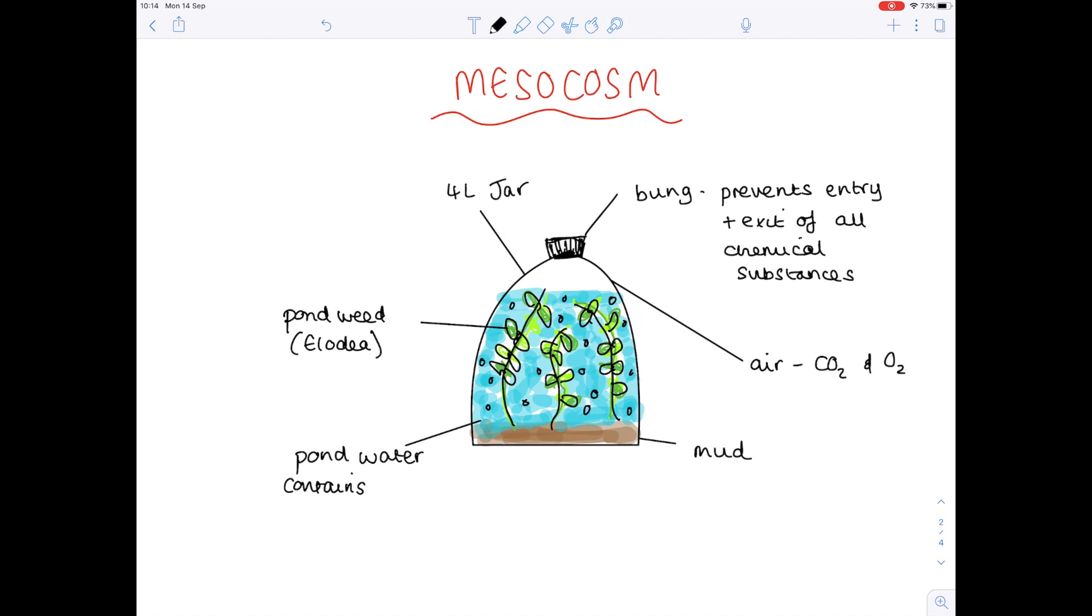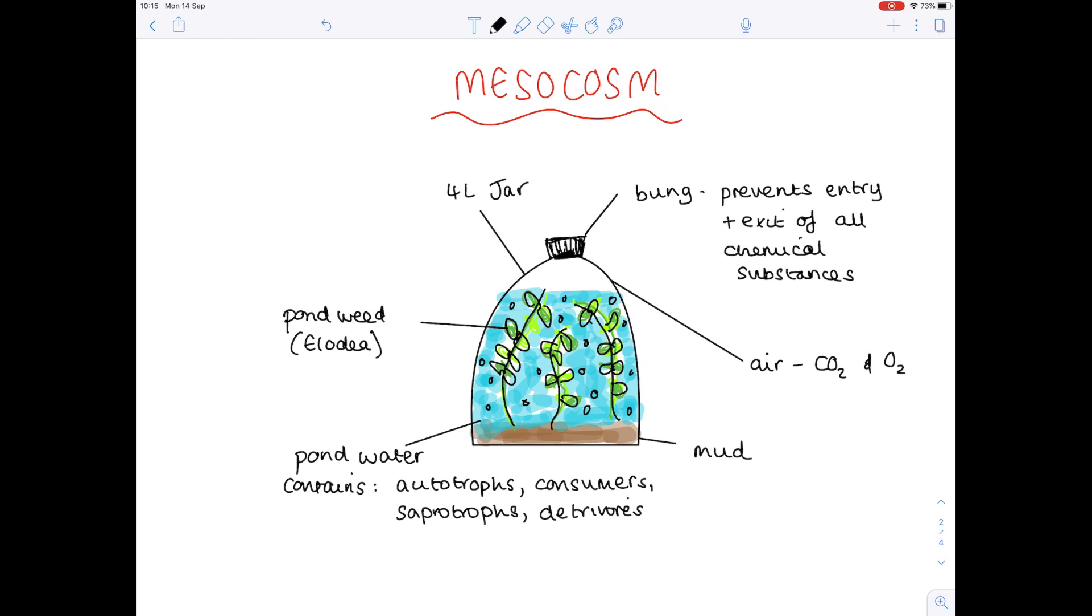There'll also be consumers in there. So things which eat the pondweed, potentially water snails. Saprotrophs, which break down dead matter by secreting enzymes extracellularly. And then finally detritivores, which do internal digestion on dead matter such as the dead leaves or the dead snails.